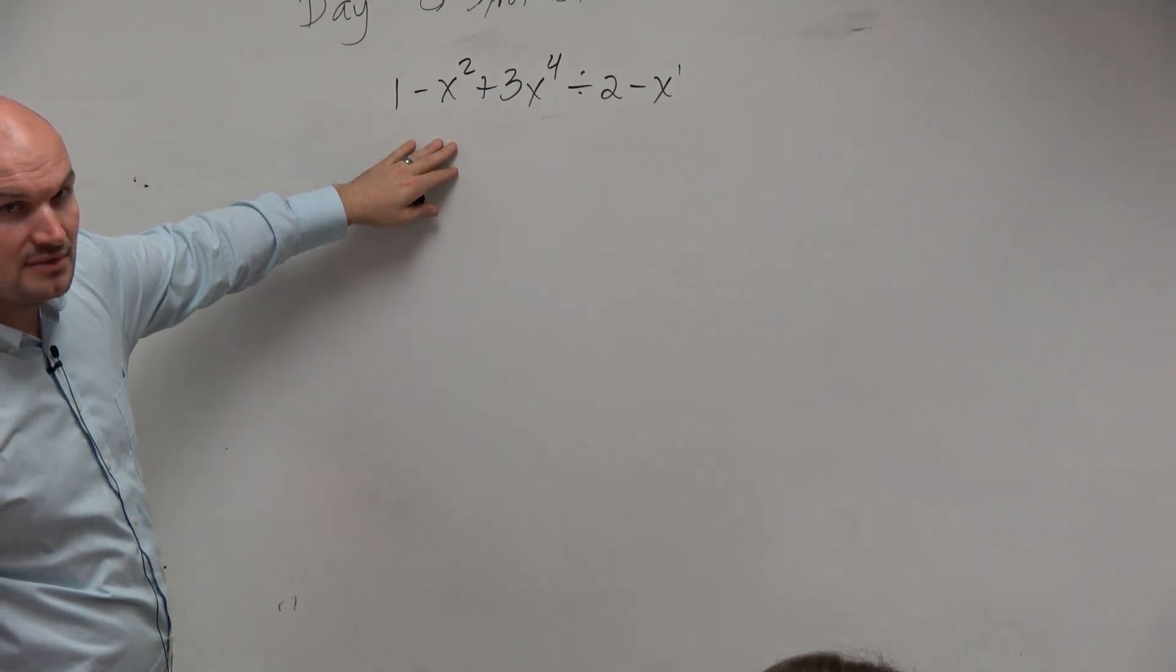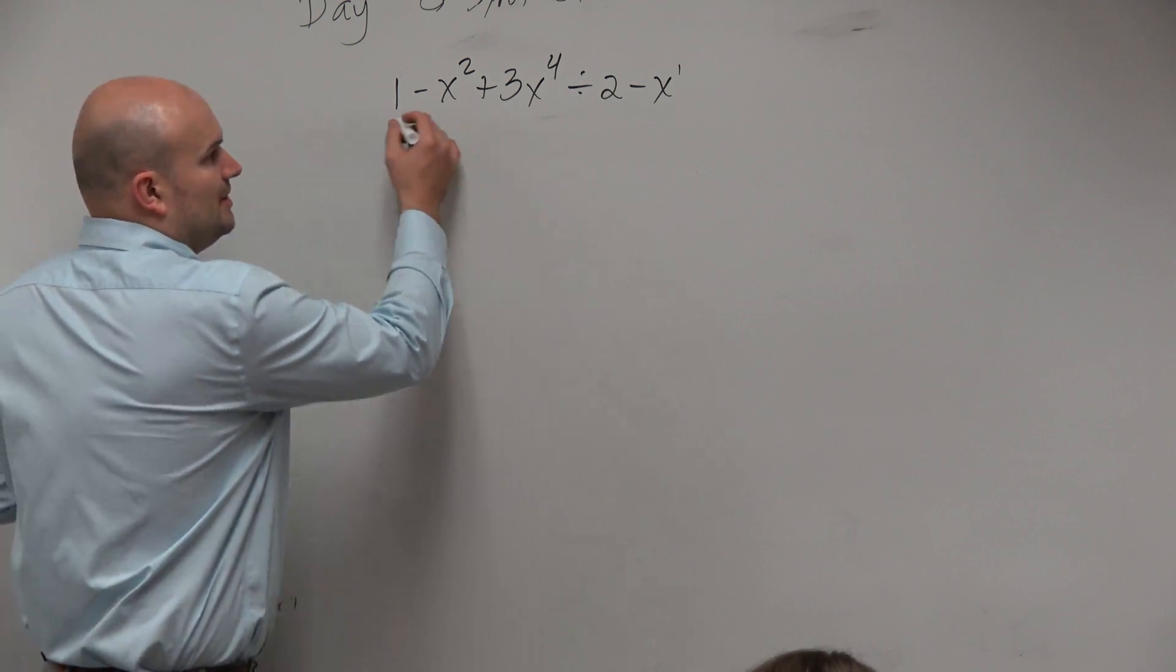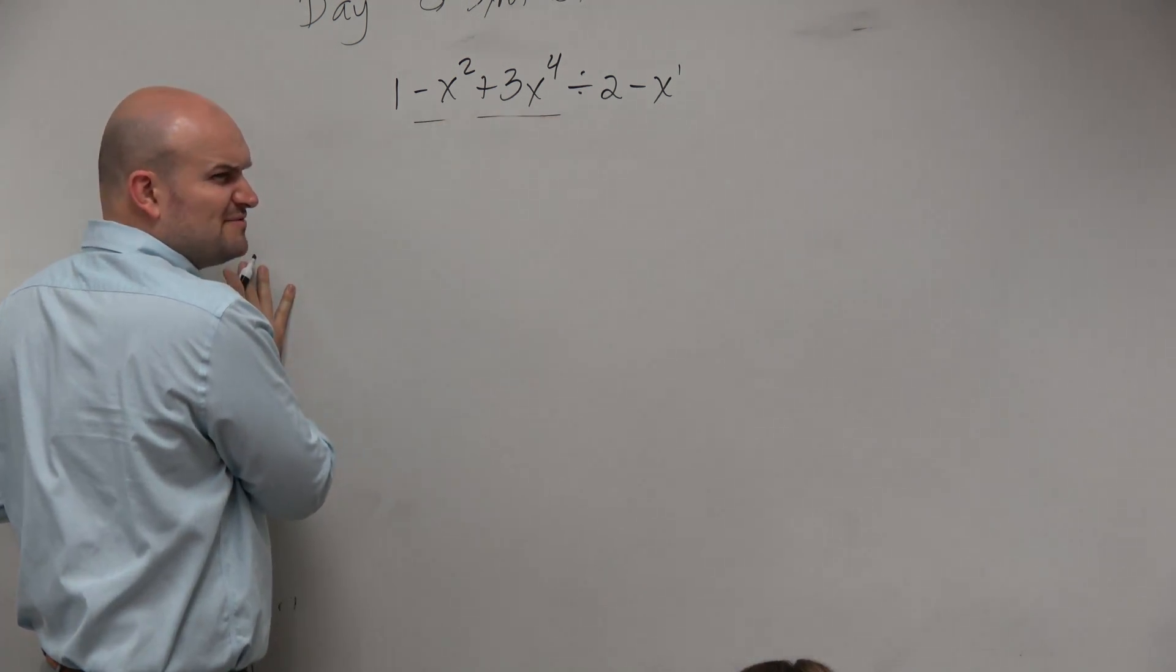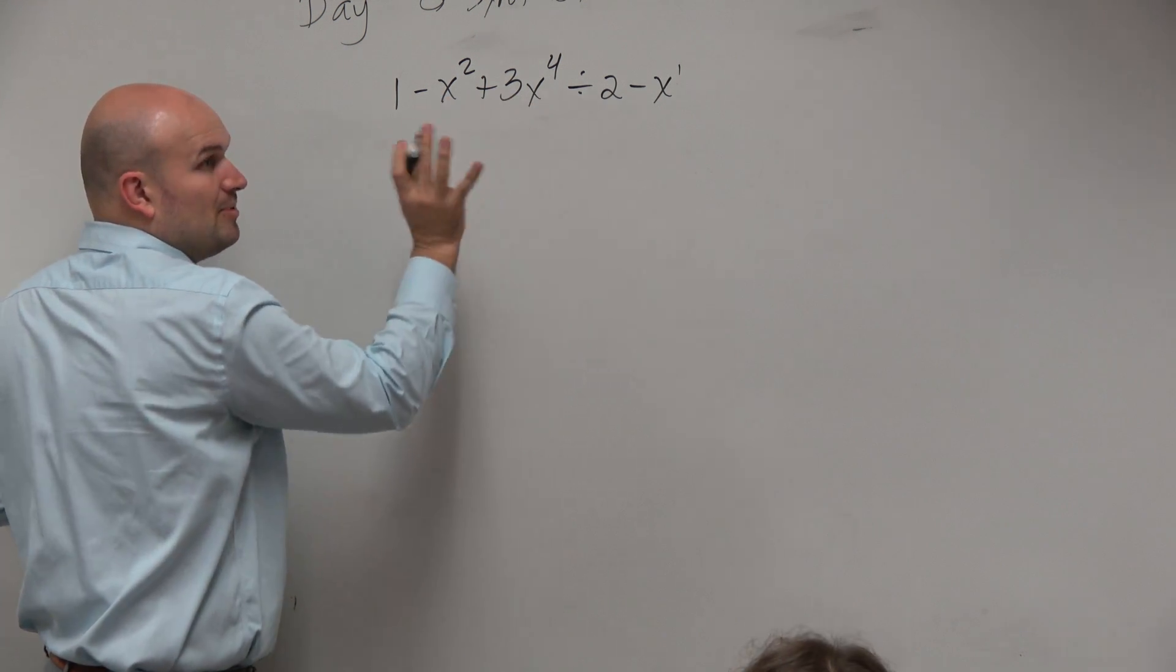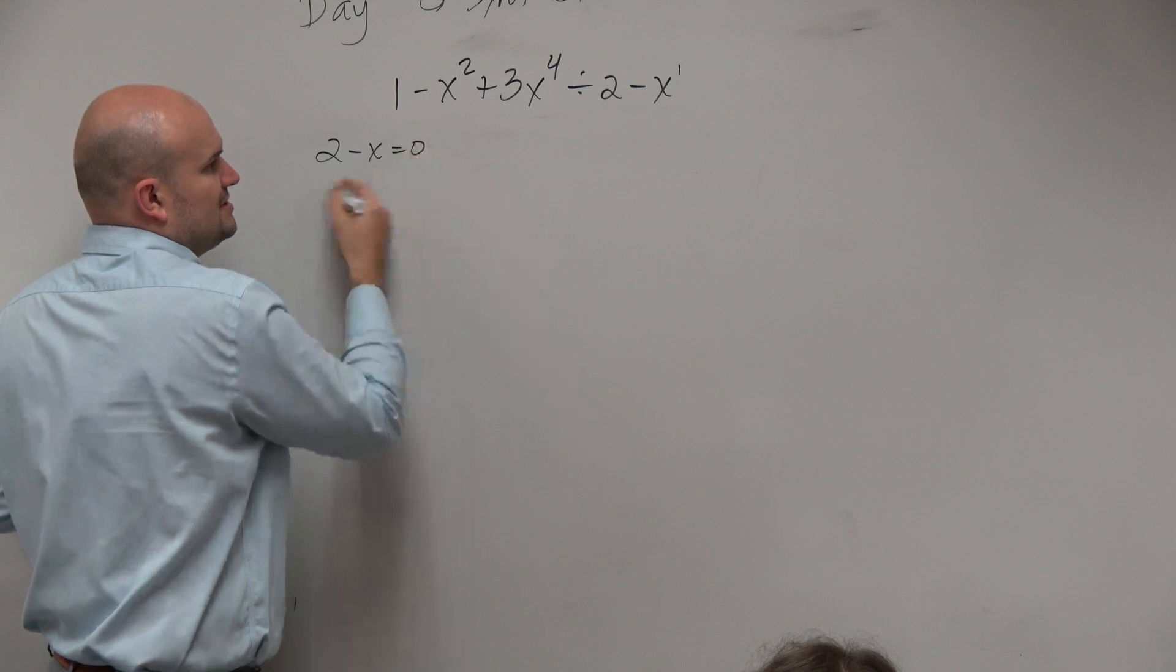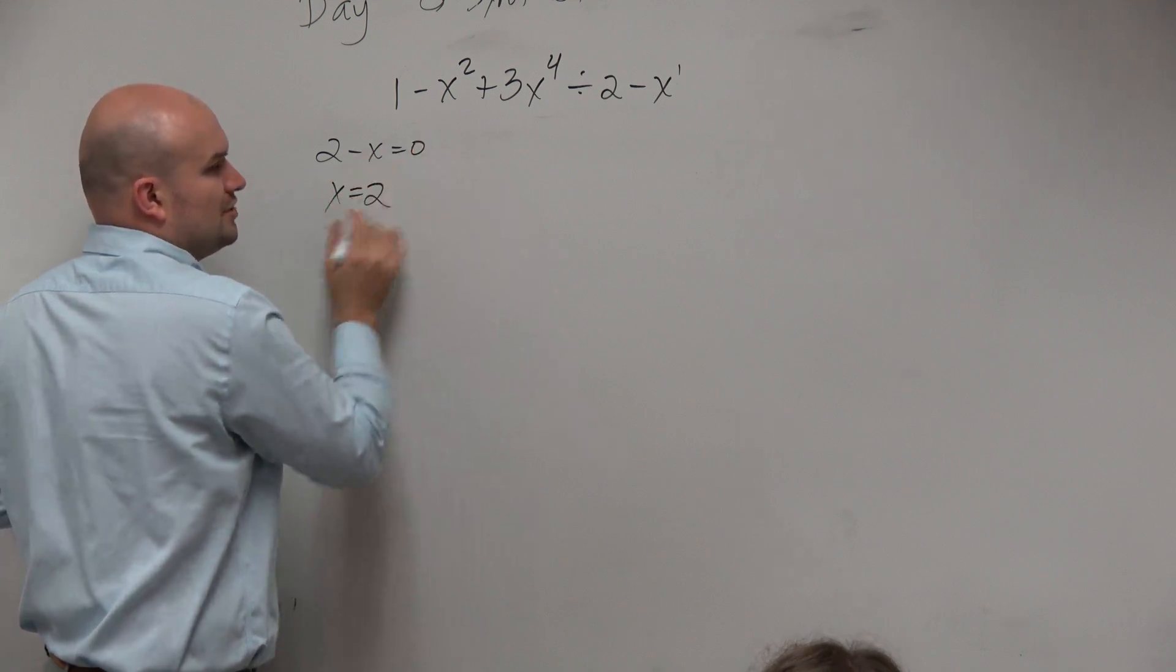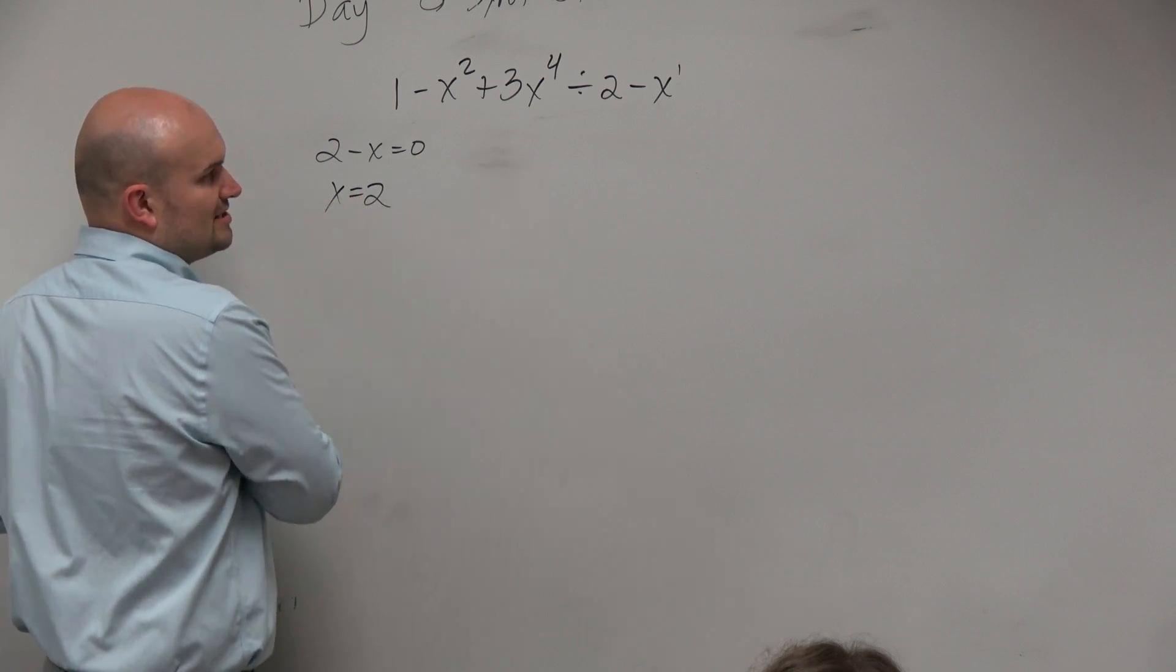But Ashlyn, you ready? Before we can apply synthetic division, we know that this is not in order, plus we have some missing terms. So first of all, if we want to figure out what our possible potential zero is, we could have 2 minus x equal to 0. But you guys would see x is equal to 2, right? So we'll put that on the, actually, hold on. So x equals 2 is going to be outside.